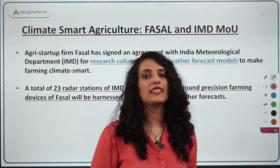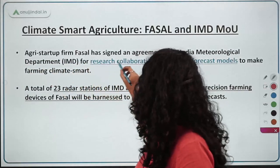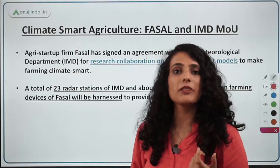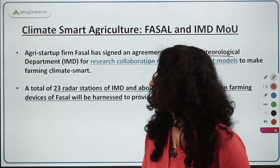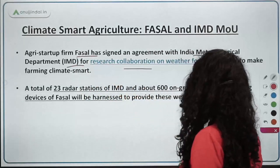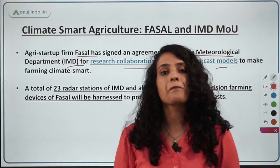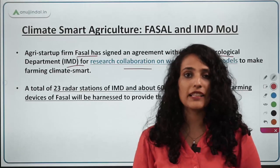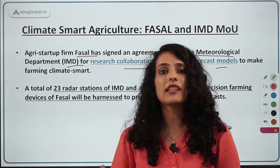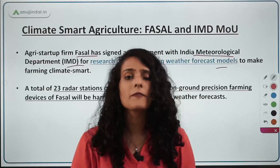Today's daily current affairs session has a very interesting topic. Agri startup firm Fasal has signed an agreement — an MOU — with IMD, the Indian Meteorological Department, which comes under the Ministry of Earth Sciences. The MOU is for research and collaboration on weather forecast models. Weather forecasting has long been used for agriculture in India. ISRO has been launching satellites, there have been many private and public investments, and initiatives by Niti Aayog, Microsoft, and Google to provide accurate weather forecast results.